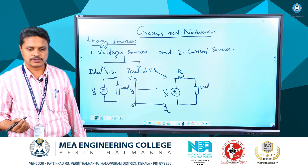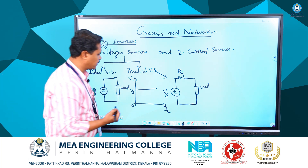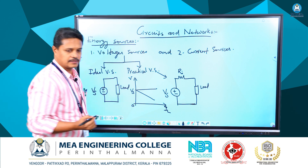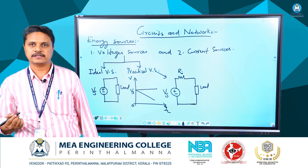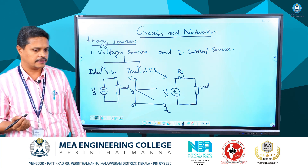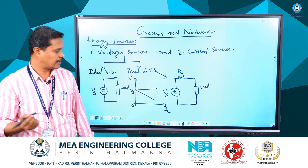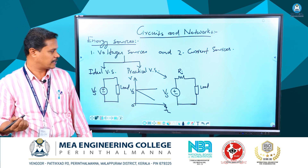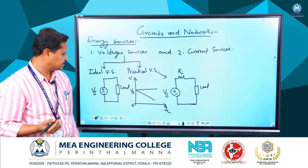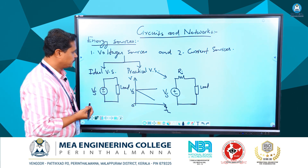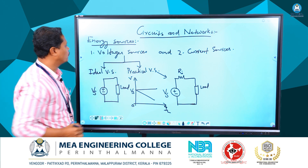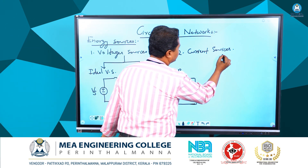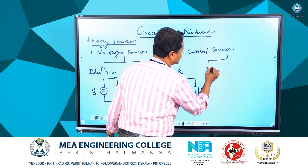In a practical voltage source, if you draw the graph, it will show a drop indicating that as the voltage is decreasing, the current will be increasing. These are the two types of voltage sources, and similarly we have current sources.